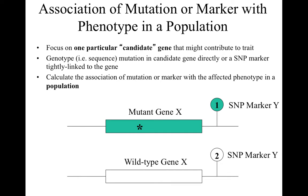The idea of a candidate gene study is to focus on one particular candidate gene that might contribute to a complex trait. Then, one calculates the association of a mutation or marker tightly linked to that candidate gene with some affected phenotype in the population. For example, do people with the disease phenotype disproportionately possess the mutant allele in the candidate gene?